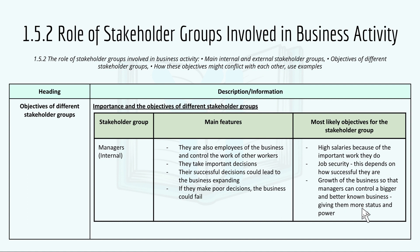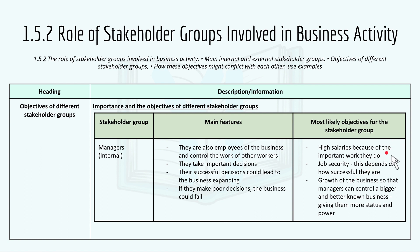Managers are also an internal stakeholder group. The main features are: they are also employees of the business, they control the work of other workers such as line managers, they take important decisions, and their successful decisions could lead to the business expanding. However, if they make poor decisions, the business could fail. Their most likely objectives include high salaries because of the important work they do, job security depending on how successfully they perform, and growth of the business so that managers control a bigger and better-known business, giving them more status and power.